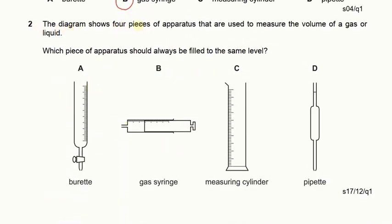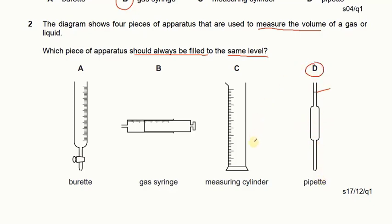In the next question the diagram shows four pieces of apparatus which are used to measure the volume of a gas or a liquid. Which piece of apparatus should always be filled to the same level? Looking at options A, B and C, there are many divisions, so we can measure many different volumes. But with a pipette, D, we can measure only a fixed volume because there is only one mark present. So a pipette has to be filled to the same level always.